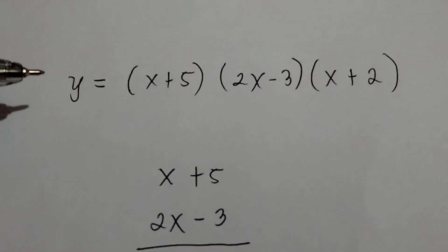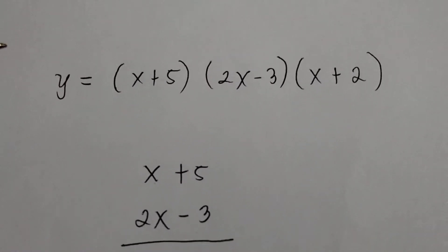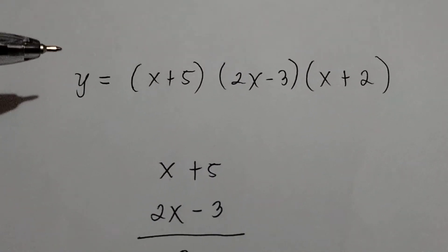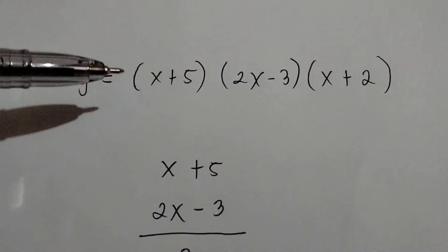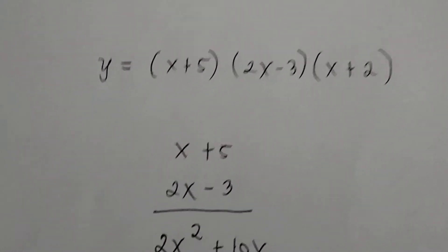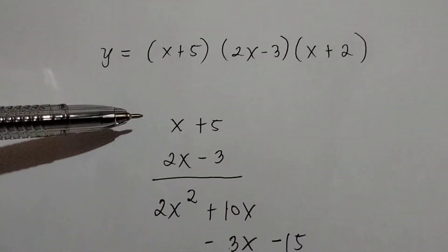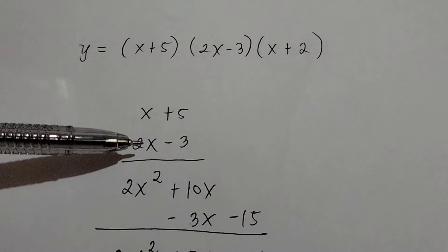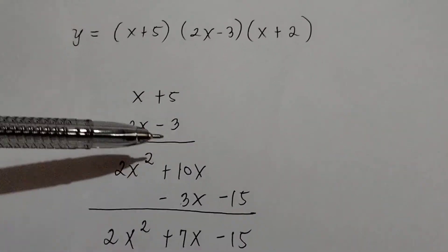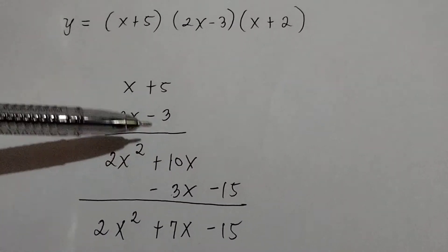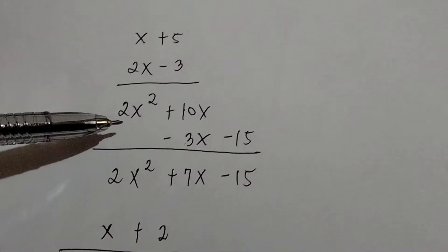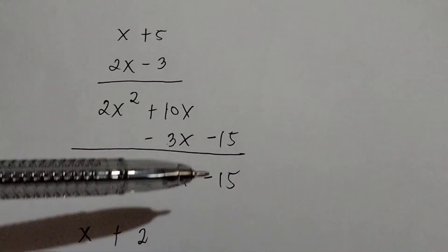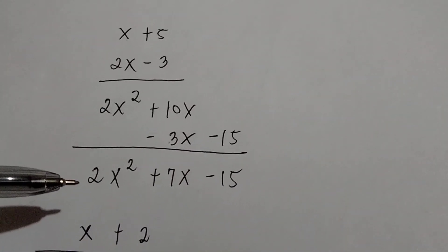Now, how about y equals the quantity x plus 5 times the quantity 2x minus 3 times the quantity x plus 2? We are going to write this in standard form by multiplying the factors. First, multiply x plus 5 by 2x minus 3: 2x times x is 2x squared, 2x times 5 is 10x, negative 3 times x is negative 3x, and negative 3 times 5 is negative 15. Simplifying gives 2x squared plus 7x minus 15.